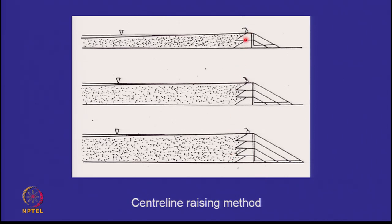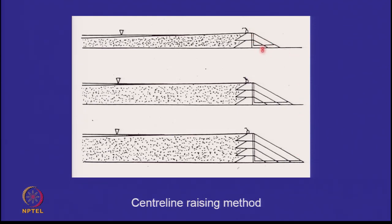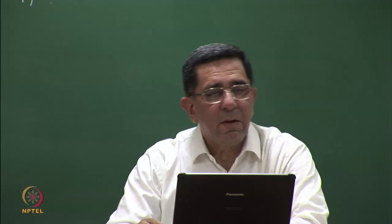The hybrid method is the centerline method, where part of the embankment sits on the loose deposit but most of the embankment sits on the densely compacted material. This requires less earthwork than the downstream method. The vulnerable slope is always the downstream slope — failure normally occurs with downstream slope failure. If the downstream slope is made of compacted material, that is called the centerline method of construction. It is intermediate in cost and advantages between the downstream and upstream methods.